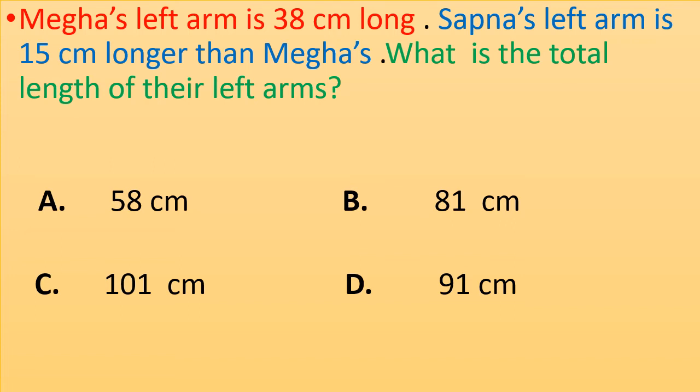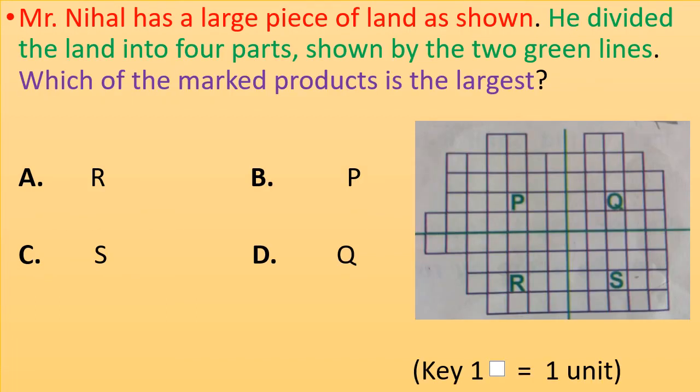Mr. Nihal has a large piece of land as shown. He divided the land into four parts, shown by the two green lines. Which of the marked products is the largest? A. R, B. P, C. S, D. Q. One square equals one unit. Take your time and answer the question.